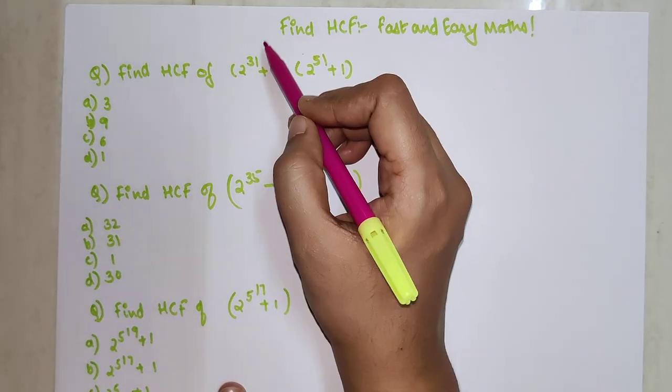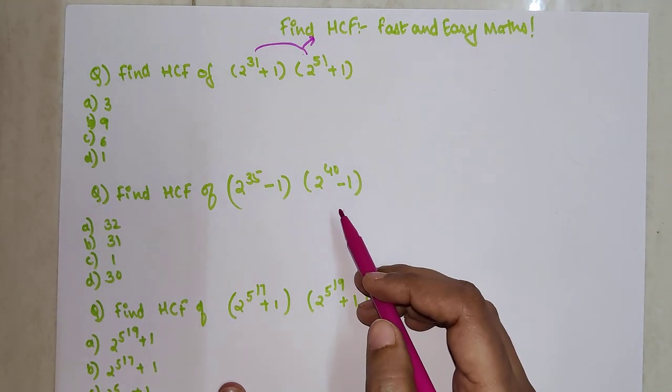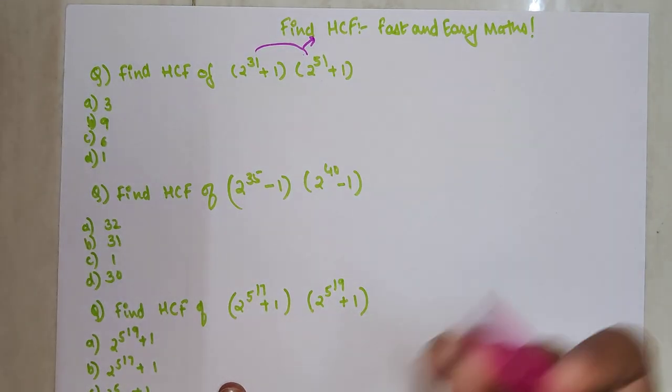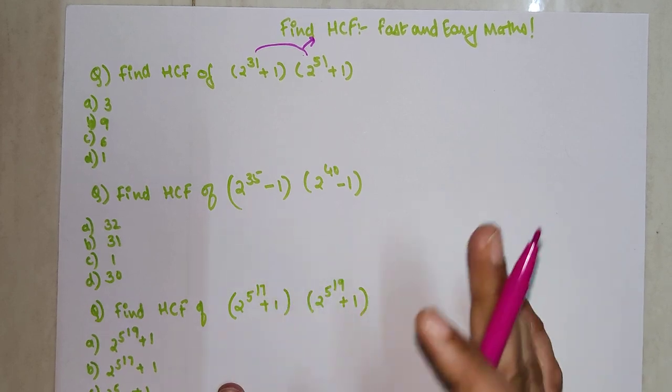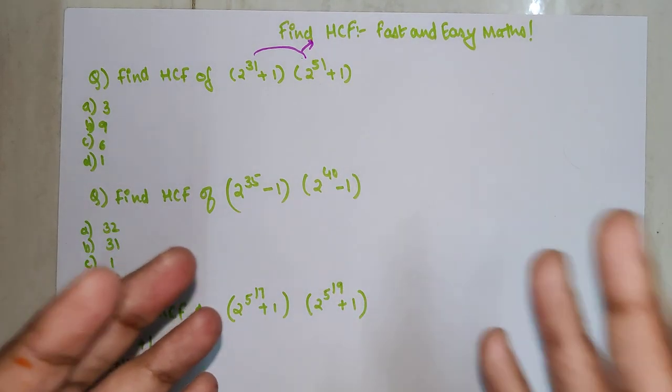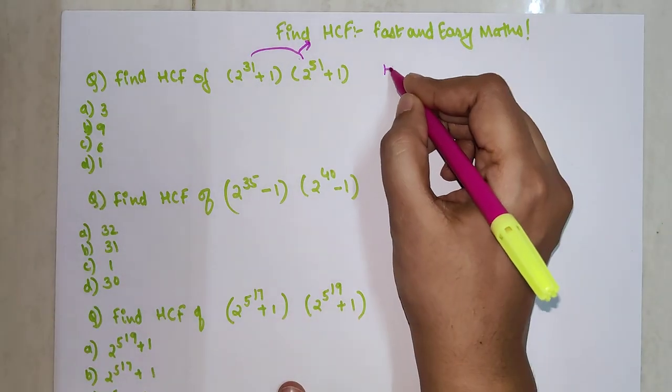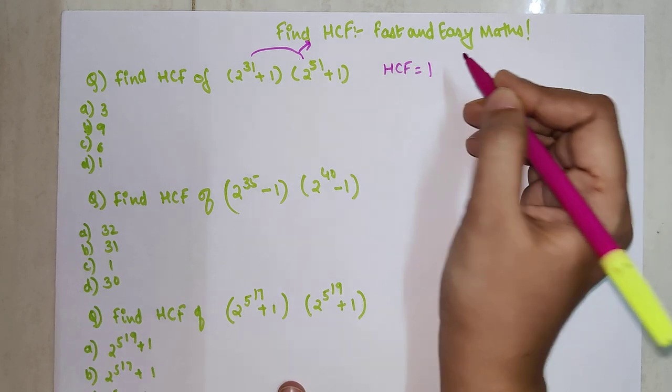In that case, you need to find the HCF of the exponents, that's it. 31 is a prime number, and 51, even if it's not prime, but whenever you have two numbers where one is prime, then your HCF becomes 1.